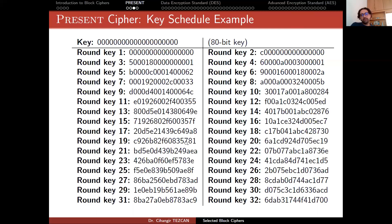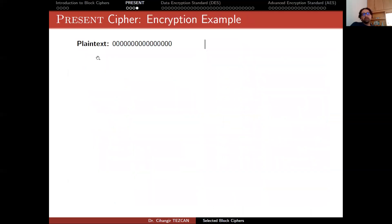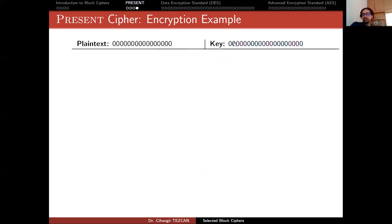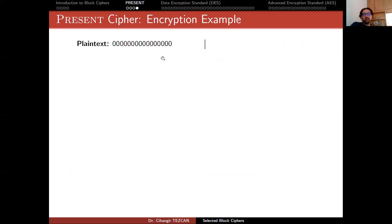Continuing the key schedule with the all-zero 80-bit key gives the complete list of 32 round key values (31 rounds plus a final round key XOR). This is a test vector: if you want to implement this cipher, these values help you verify that you implemented the key schedule correctly.